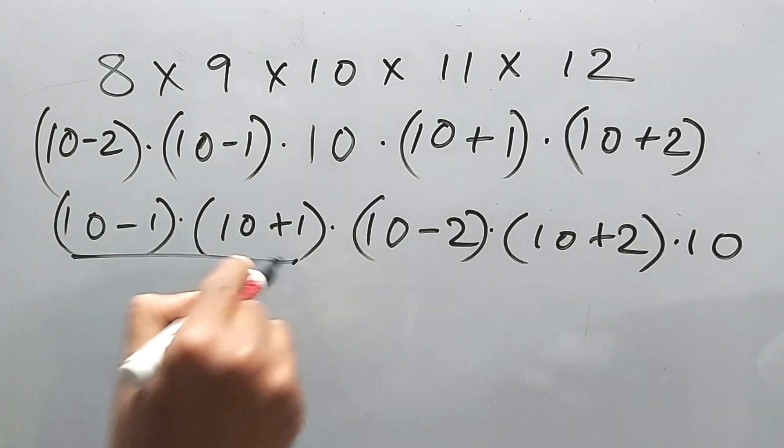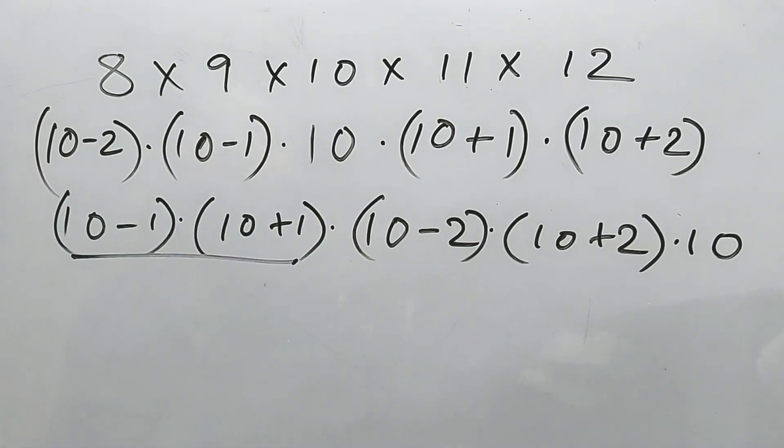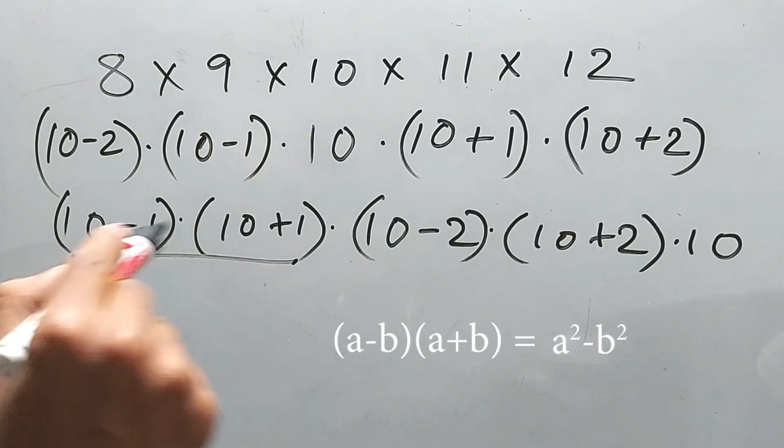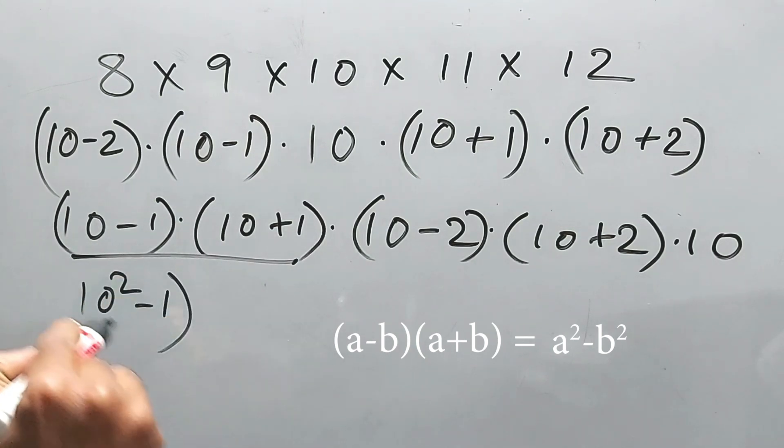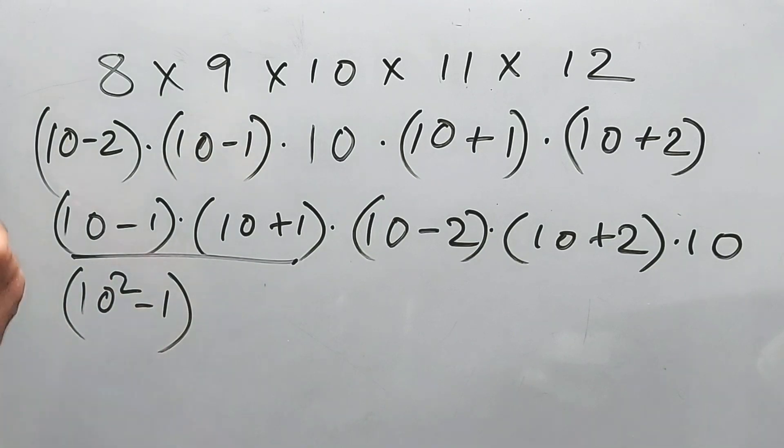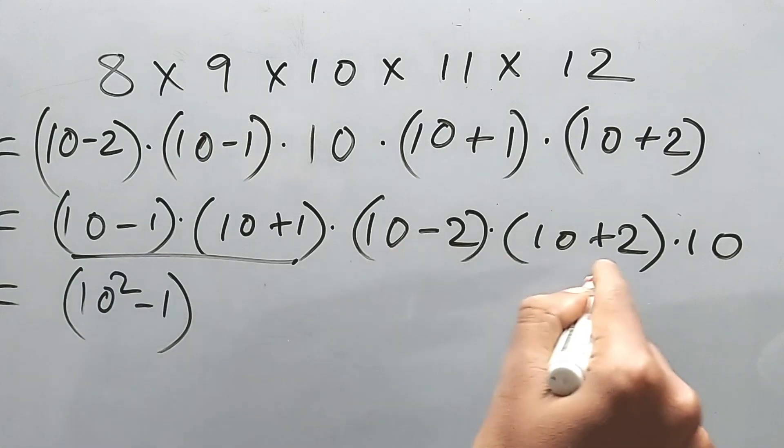Now what is this? Can you tell me? This is (a-b) into (a+b). What is the formula, do you know this? Yes, it is a² minus b². Right, so 10² minus 1², 1² we can write it as 1. I forgot this equals sign.